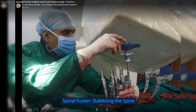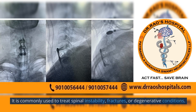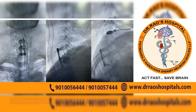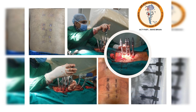Spinal Fusion – Stabilizing the Spine. Spinal fusion uses bone grafts or implants to join two or more vertebrae together. It is commonly used to treat spinal instability, fractures, or degenerative conditions. Dr. Rao utilizes surgical techniques to promote fusion and stability, alleviating pain and restoring spinal function.